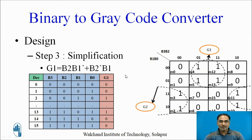For g1, after placing the minterms in the K-map, we have minterms m3, m2, m11, m10 forming one group, and m4, m5, m12, m13 forming a second group. For group 1 we have b2·b1 bar, and for group 2 we have b1·b2 bar. So the g1 equation becomes: g1 = b2·b1 bar + b2 bar·b1.